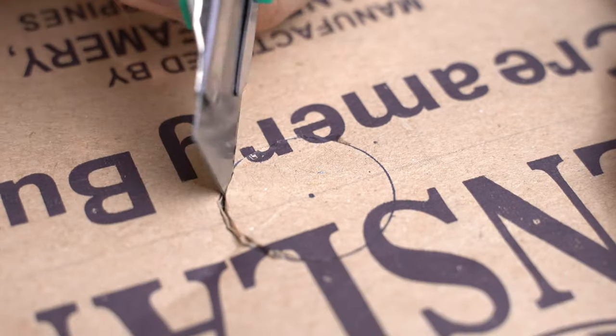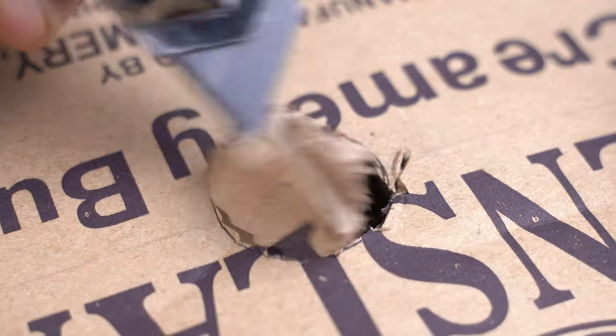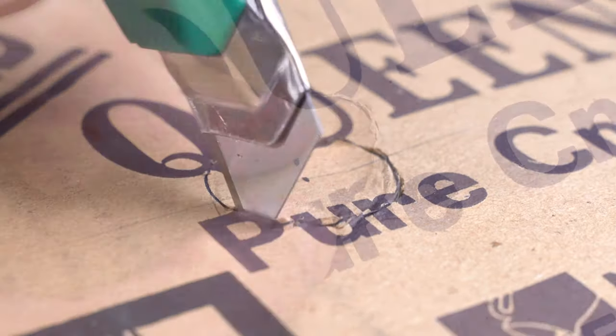Now grab a cutter and cut a hole with a 1-inch diameter. You can use a ruler and a compass to easily find the center. Do the same for the other side of the box.